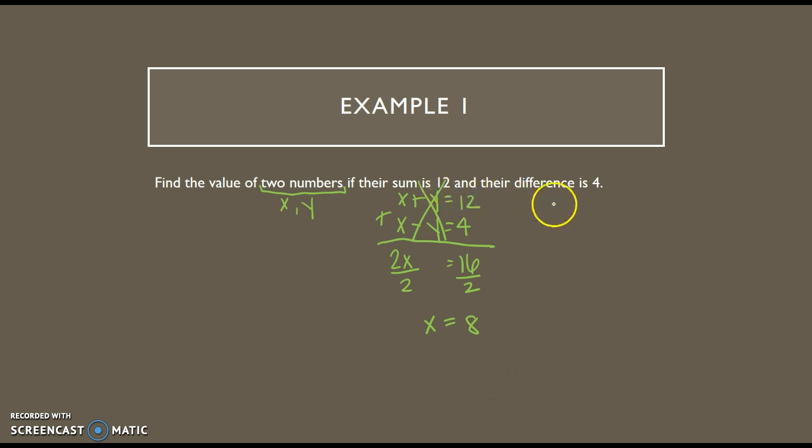Then I've got to come back up to one of my equations and plug in 8. So I'll just do the top one. So 8 plus y has to equal 12. Subtract 8 from both sides. y equals 4. So my two numbers are 8 and 4. And that's it.